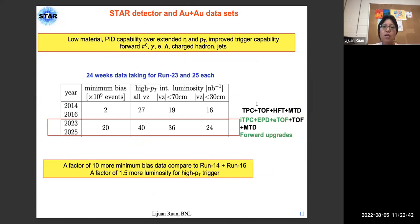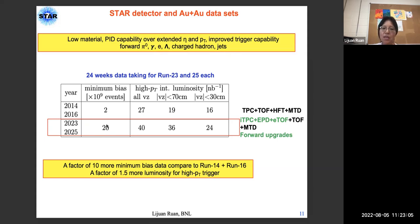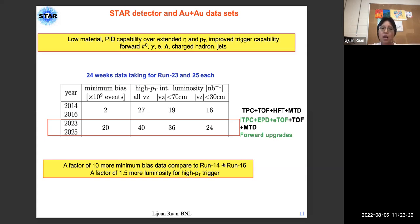For the gold-gold program, STAR has a low material budget detector with excellent PID capability over extended eta and pT range, improved trigger capability, and forward PID capabilities. For runs 23–25, we would like to take about 20 billion minimum bias events, and sample 40 inverse nanobarn luminosity for rare probes. This is a factor of 10 more minimum bias data and a factor of 1.5 more luminosity for high-pT triggers compared to runs 14 and 16.